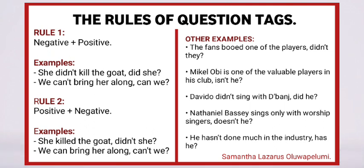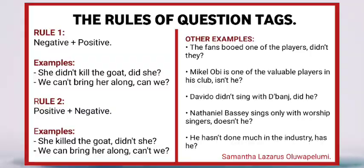Other examples: 'The fans booed one of the players. Didn't they?' 'Michael Obie is one of the valuable players in his club. Isn't he?' 'Davidos didn't sing with the bench. Did he?' 'Nathaniel Bassi sings only with worship singers. Doesn't he?' 'He hasn't done much in the industry. Has he?'